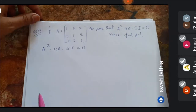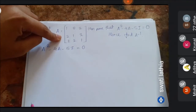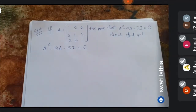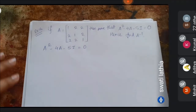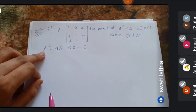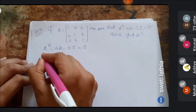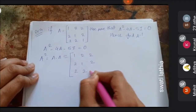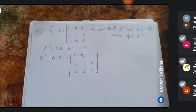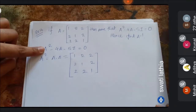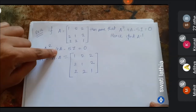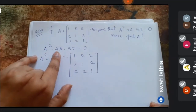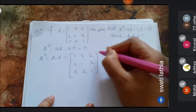Now be careful — we won't use a standard identity matrix I here. If the matrix is 3×3, take I as 3×3; if 2×2, take 2×2. Normally I is not given — you have to take the identity matrix yourself. To find this equation, we need to do three steps separately: first A², then multiply A by 4 (scalar multiplication), then multiply identity matrix by 5, and then subtract.